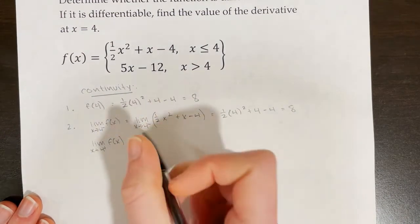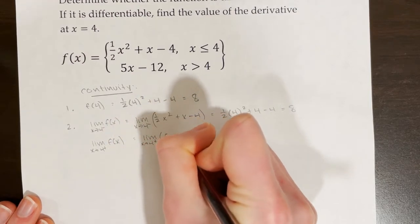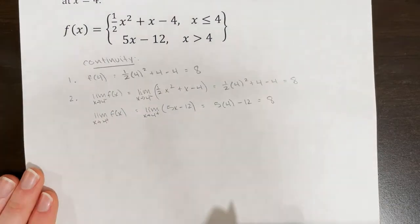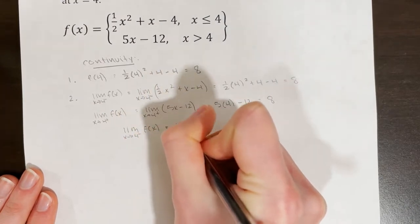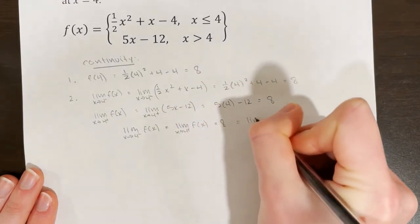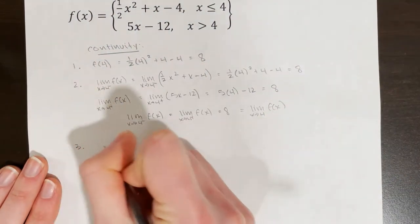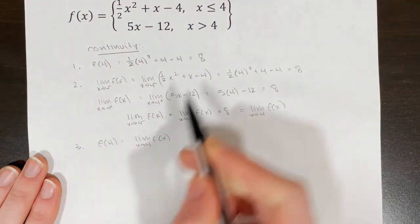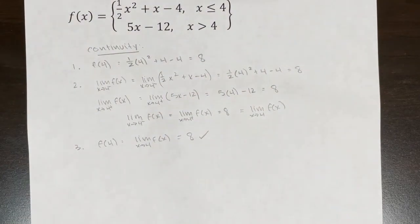For the limit on the right side, I use the bottom function: the limit as x approaches 4 from the right of 5x minus 12. Directly substituting 4, this is also equal to 8. So the limit as x approaches 4 from the left of f of x equals the limit from the right, both equal to 8, and therefore the overall limit as x approaches 4 of f of x equals 8. In step 3, I verify that f of 4 equals the limit as x approaches 4 of f of x. Since both are equal to 8, the function is continuous at x equals 4.